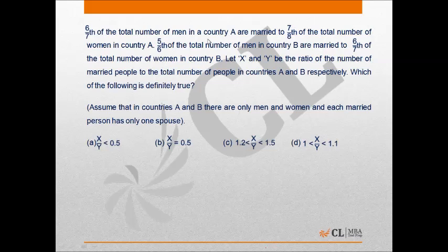Let's start with the first statement. Here it is saying 6/7th of the total number of men in country A are married to 7/8th of the total number of women in country A. If x is the total number of men and y is the total number of women in country A,